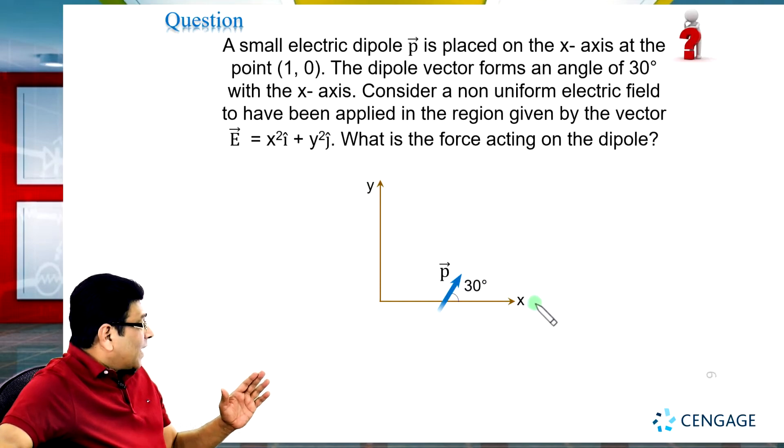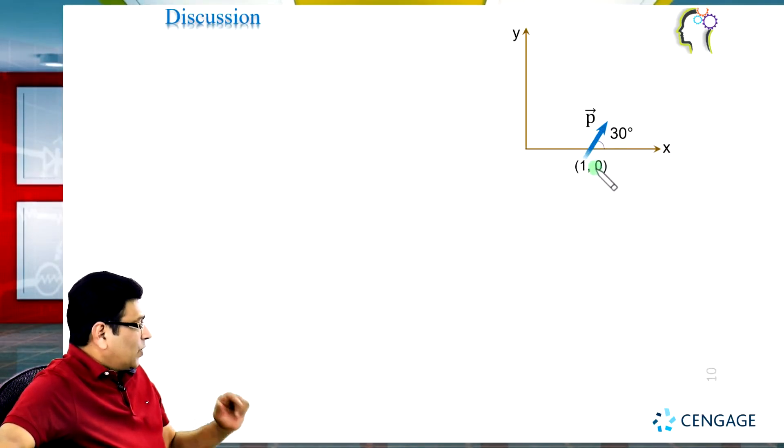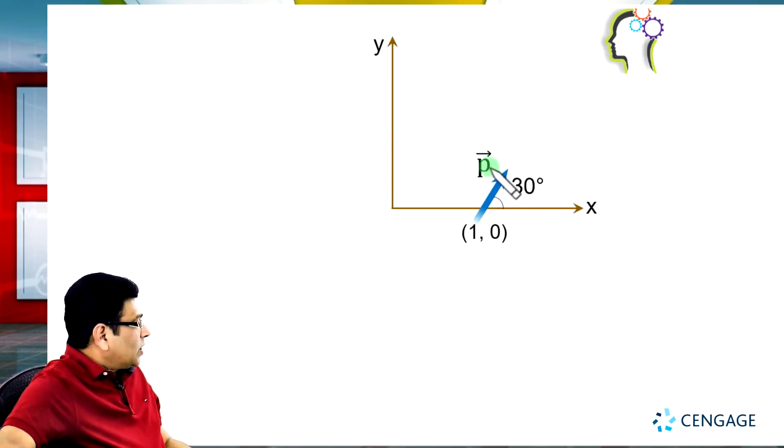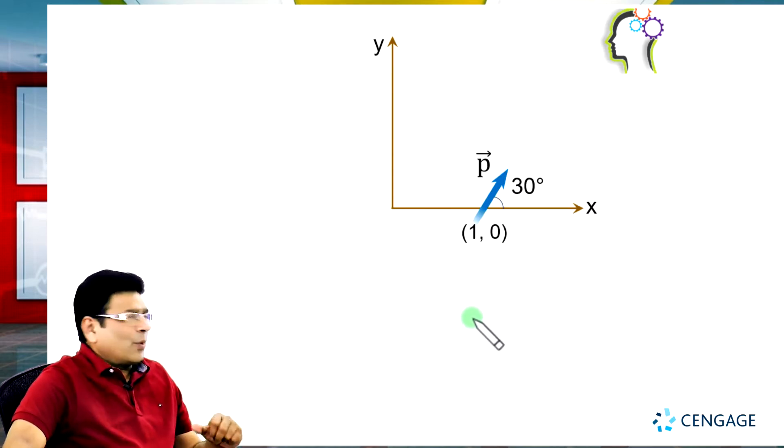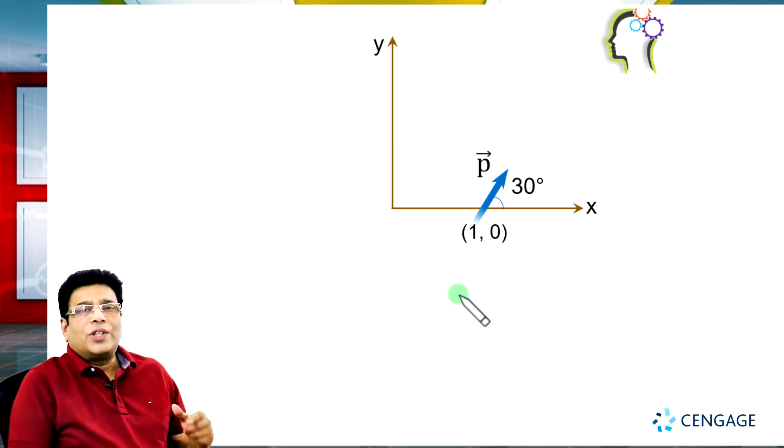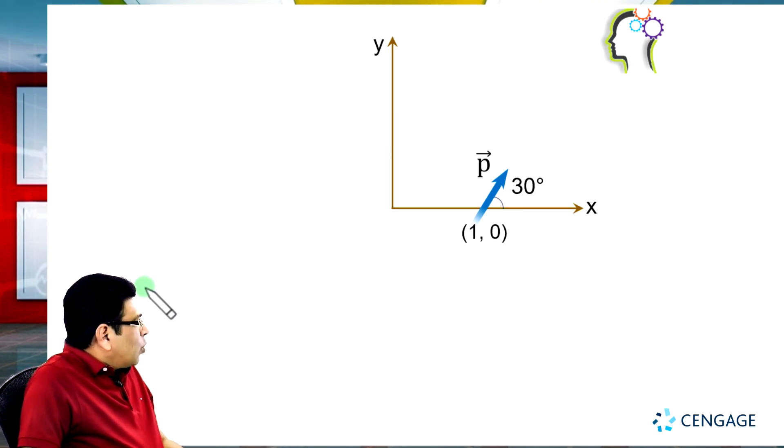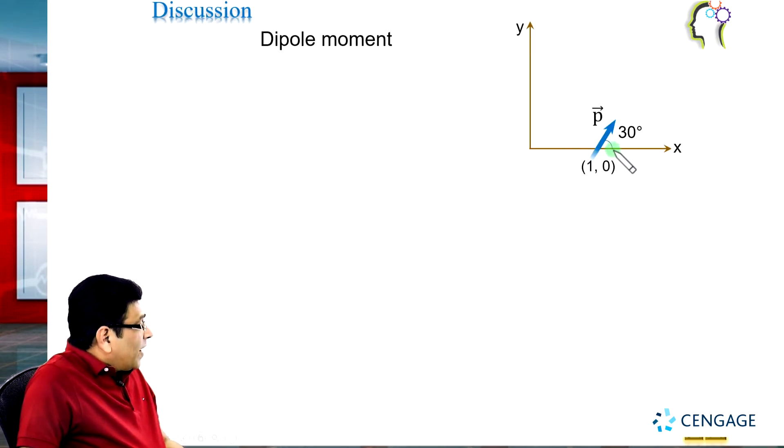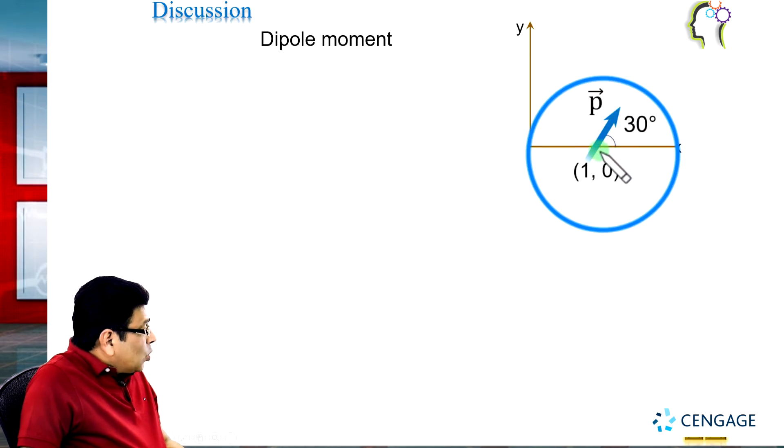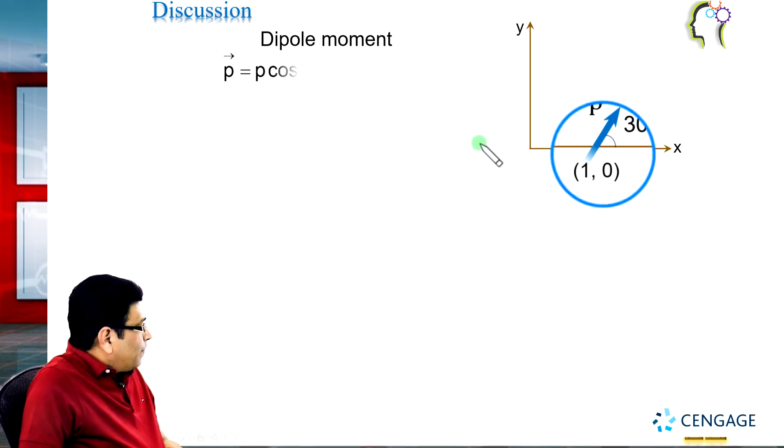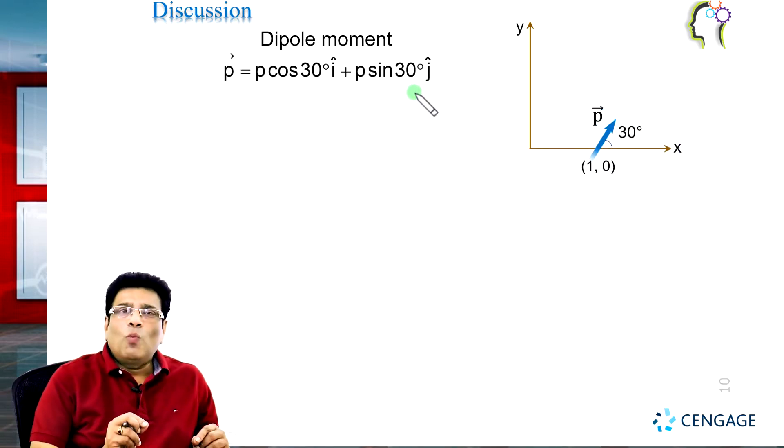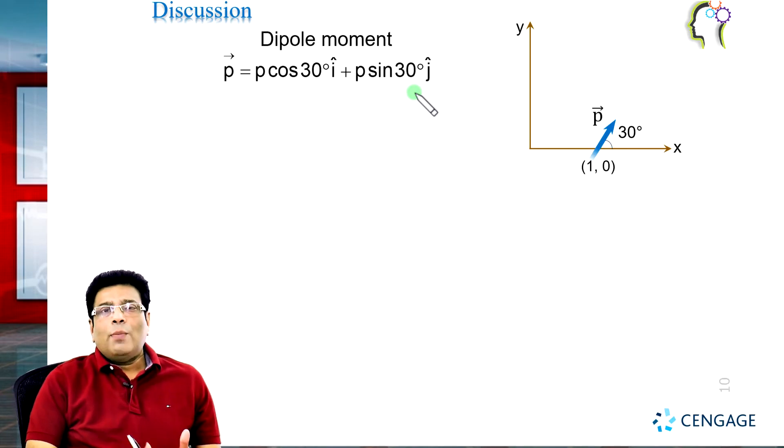Let us make the diagram. This is the coordinate (1,0). This is the P vector dipole moment. The dipole moment vector is inclined at 30 degrees with the horizontal or x axis. We can write the vector components in terms of i cap and j cap. The dipole moment vector will be equal to p cos 30° i cap plus p sin 30° j cap.